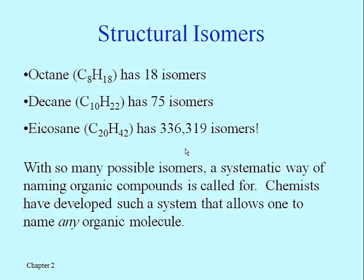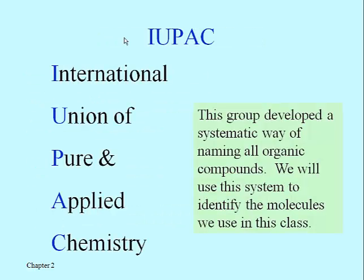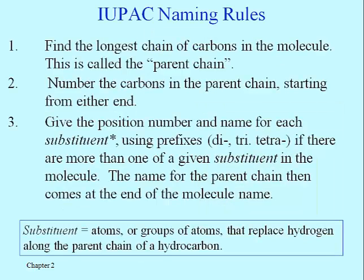This system is not only good for alkanes — it's a system we're going to see throughout organic chemistry. IUPAC is the acronym used to identify this naming system. IUPAC is actually a committee of chemists from countries all around the world that meets and decides on official ways to put names with organic structures. We're going to learn a few rules for doing that for alkanes, which I've adopted or amended a little from the way they appear in chapter 2 of your book.